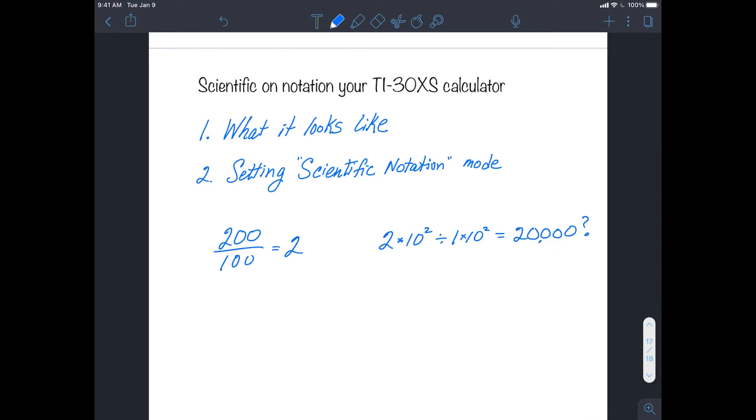Well, what happened is this. The calculator uses strict order of operations when it interprets this expression. So what it did was it did the 10 squareds first, but then it did 2 times 100, that's 200, divided by 1, that's 200, but then times 100 again. So we got 20,000.